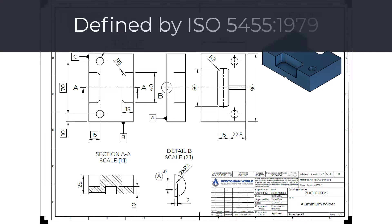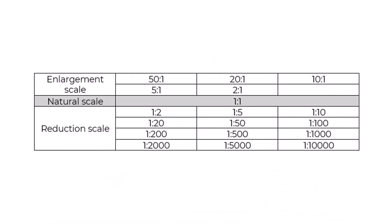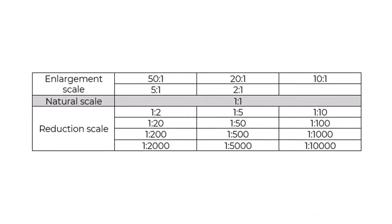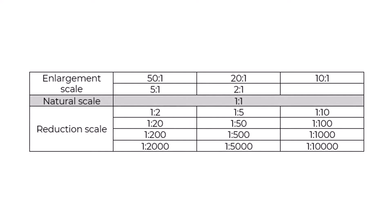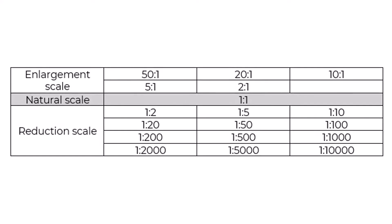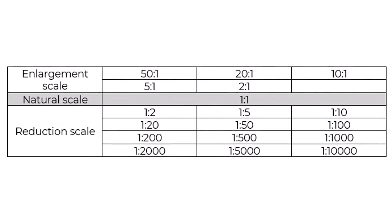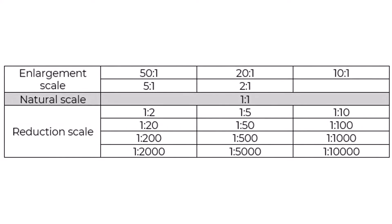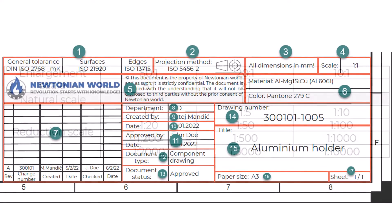The scales are defined by ISO 54-55:1979. The natural scale is 1:1. Enlargement scales can be 5:1, 50:1, 2:1, 20:1, and 10:1. Reduction scales can be 1:2, 1:20, 1:200, 1:5, 1:50, 1:10, 1:100, etc.